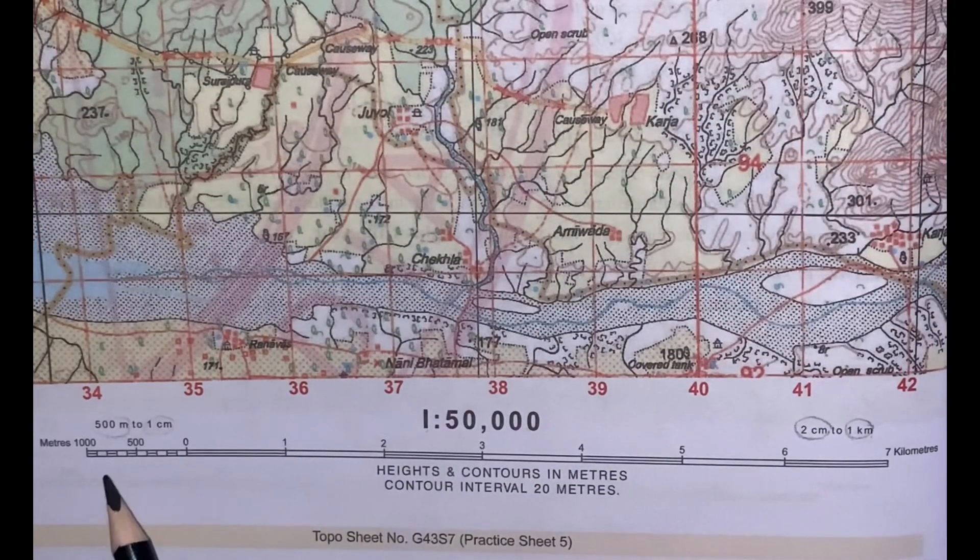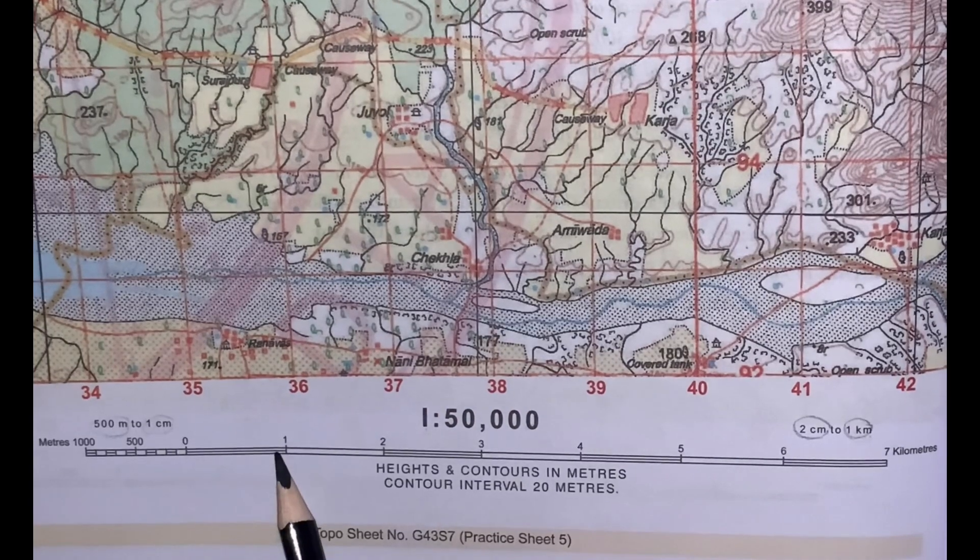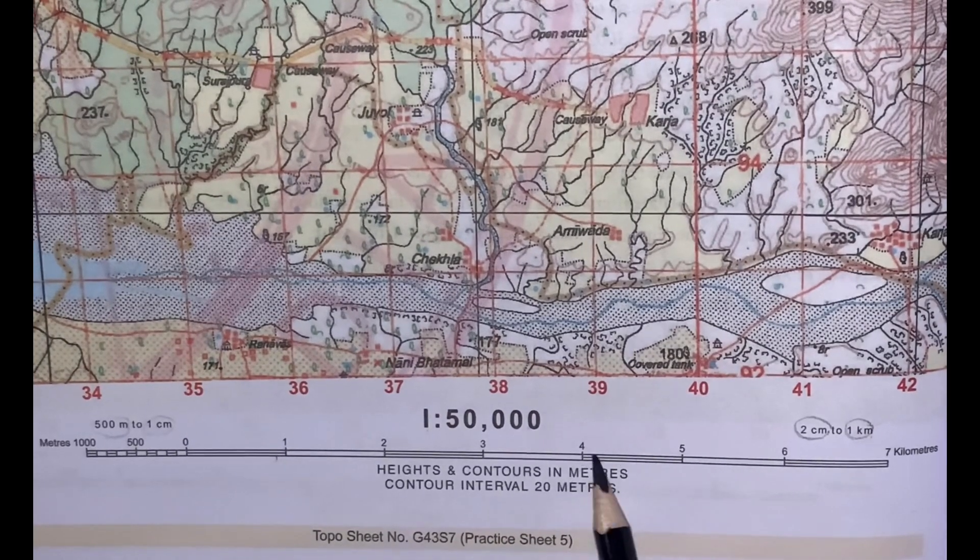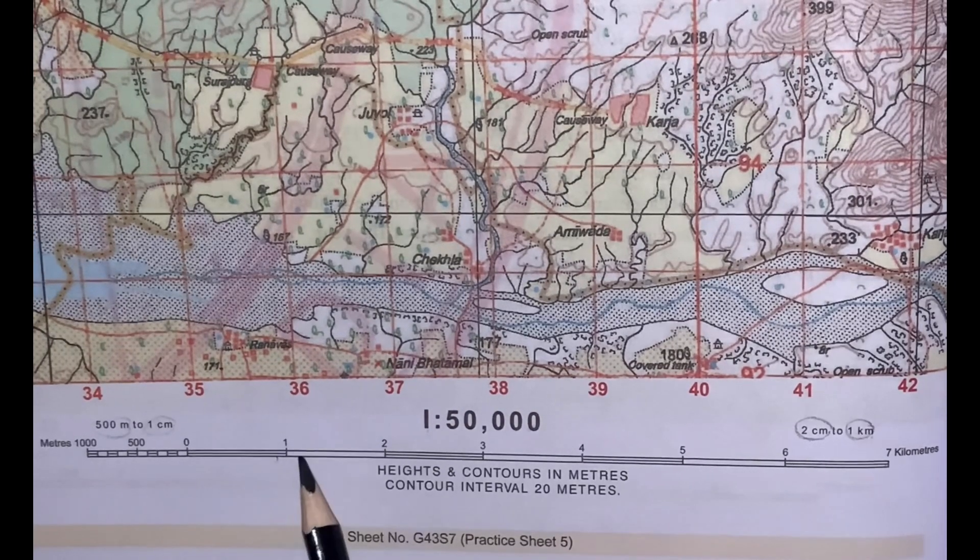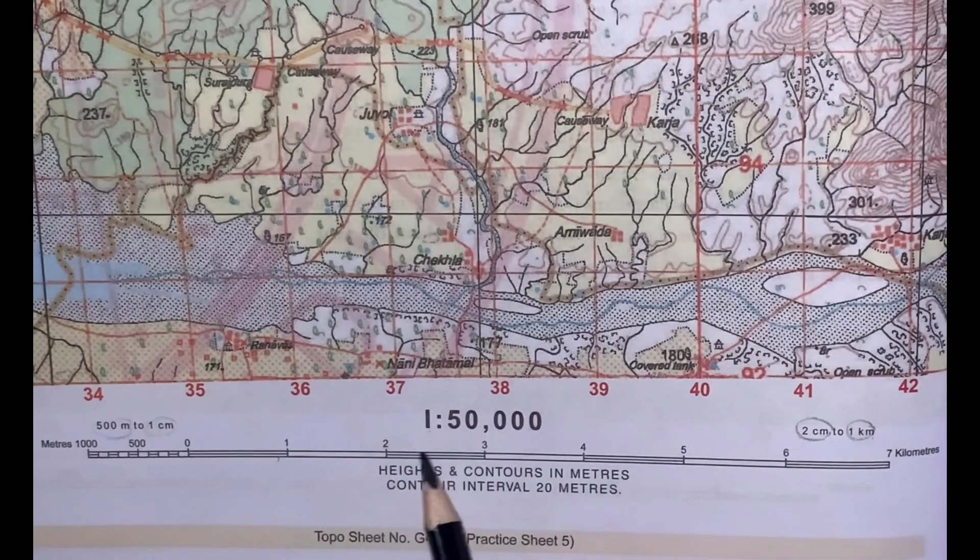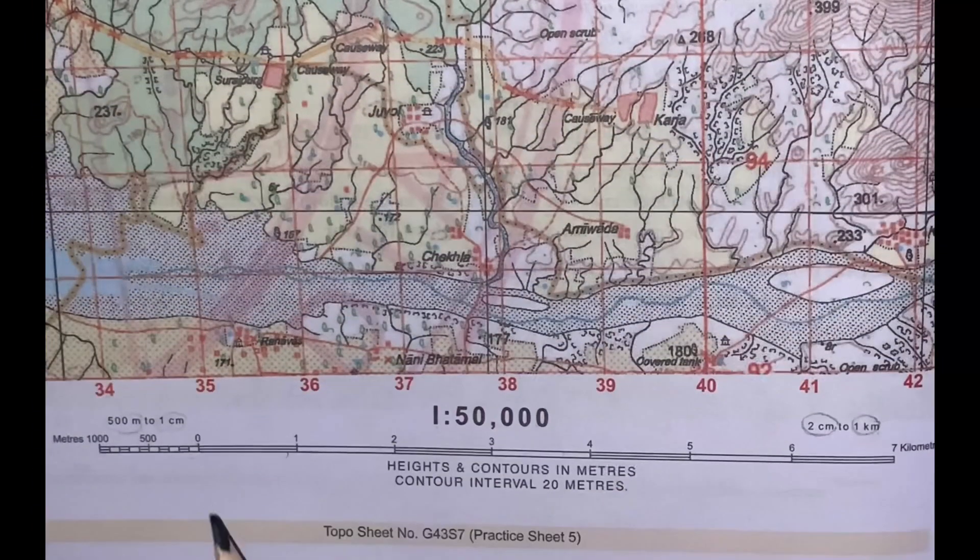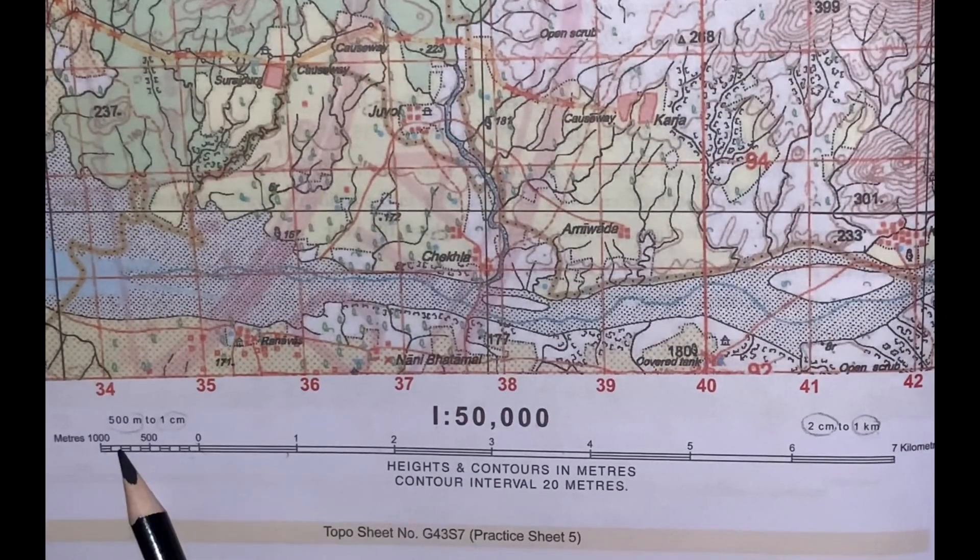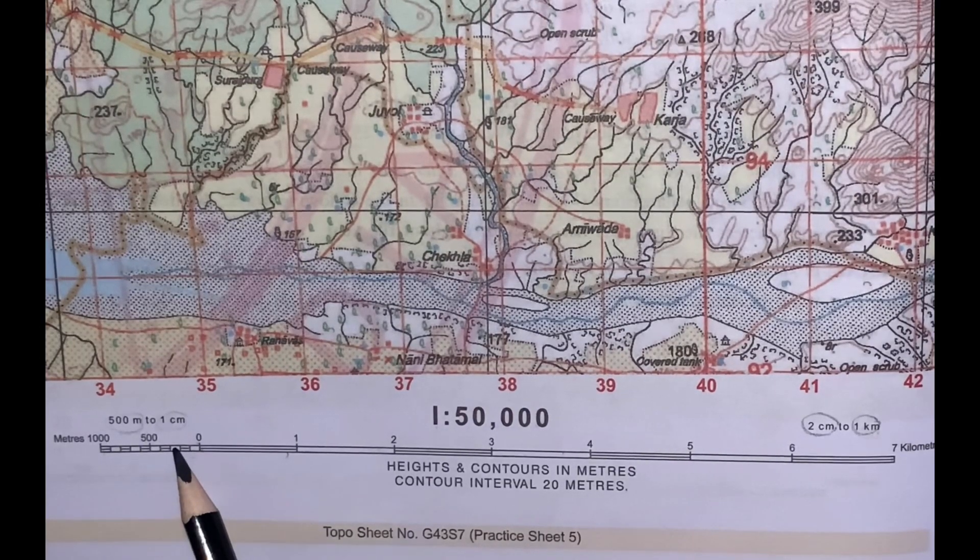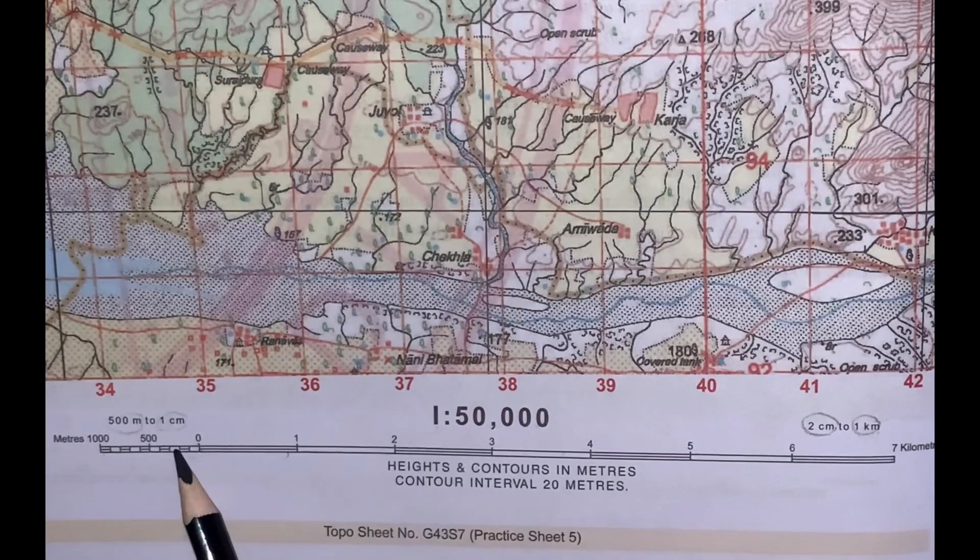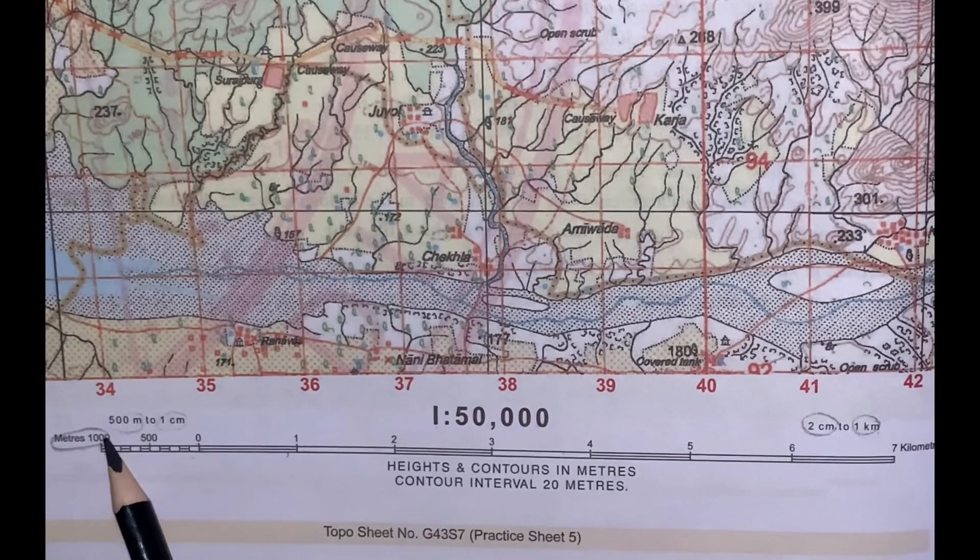Can you see this drawing? This is the graphic or linear scale. To the right of zero, 7 kilometers is shown, with each 2-centimeter compartment representing 1 kilometer. To the left of zero, this 2-centimeter compartment is further divided into 10 small parts, showing 100 meters each, as there are 1,000 meters in one kilometer.